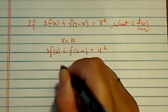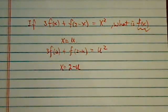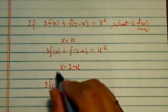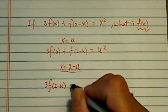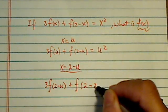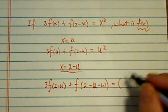Now next, we're going to say x is equal to 2 minus u. Now this is where the interesting part comes in. If x equals 2 minus u, we'll put it over here, plus f of 2 minus whatever x is, 2 minus u, equal to whatever x you had.